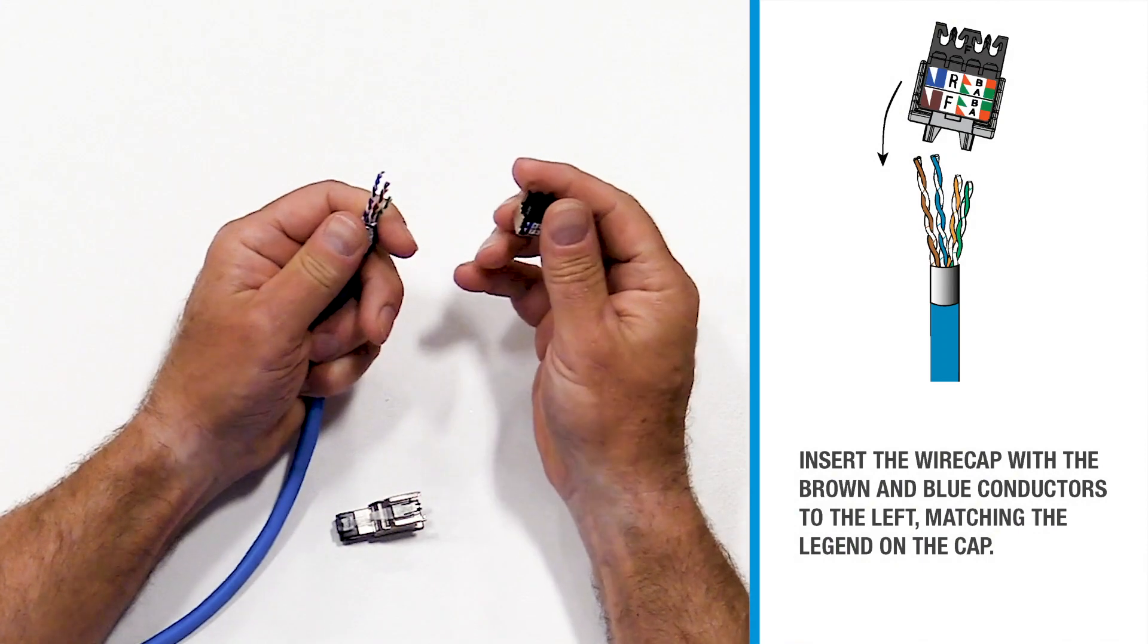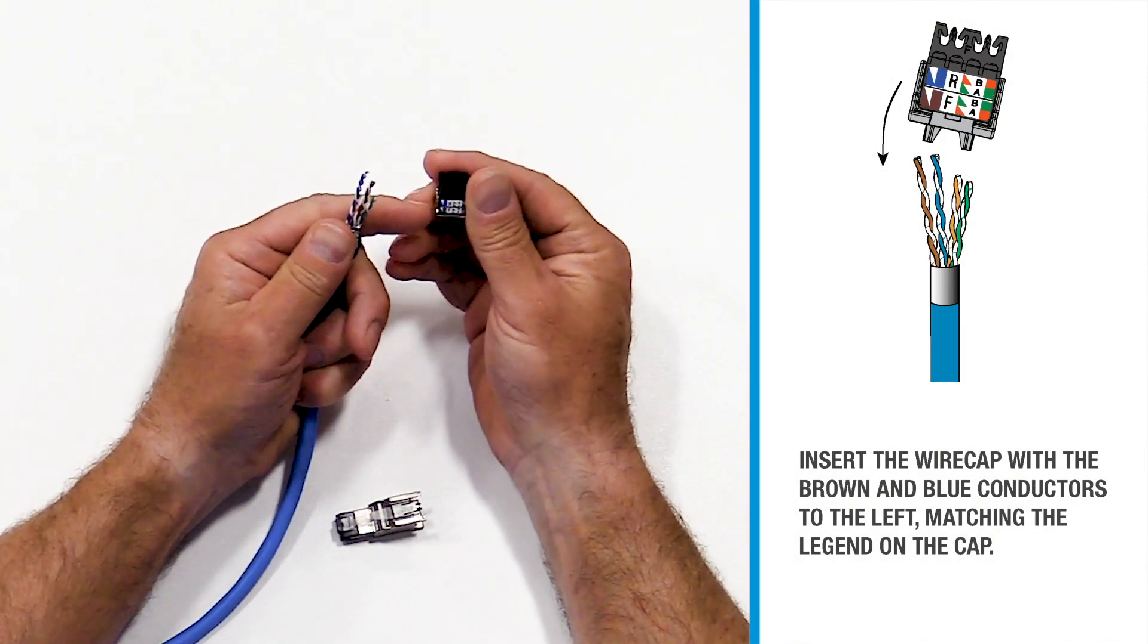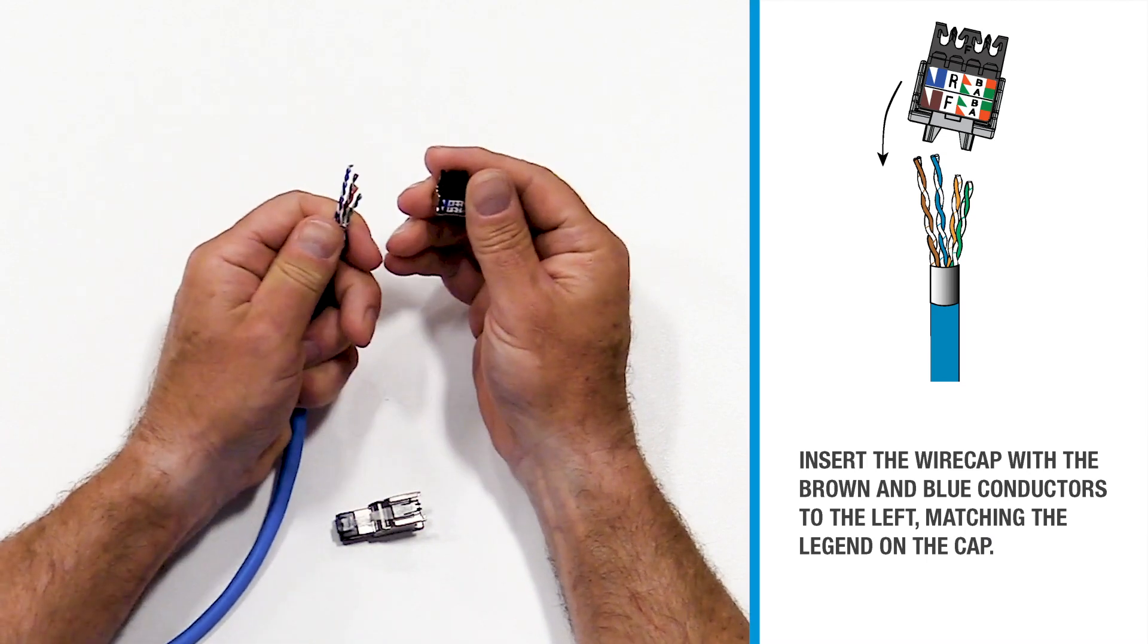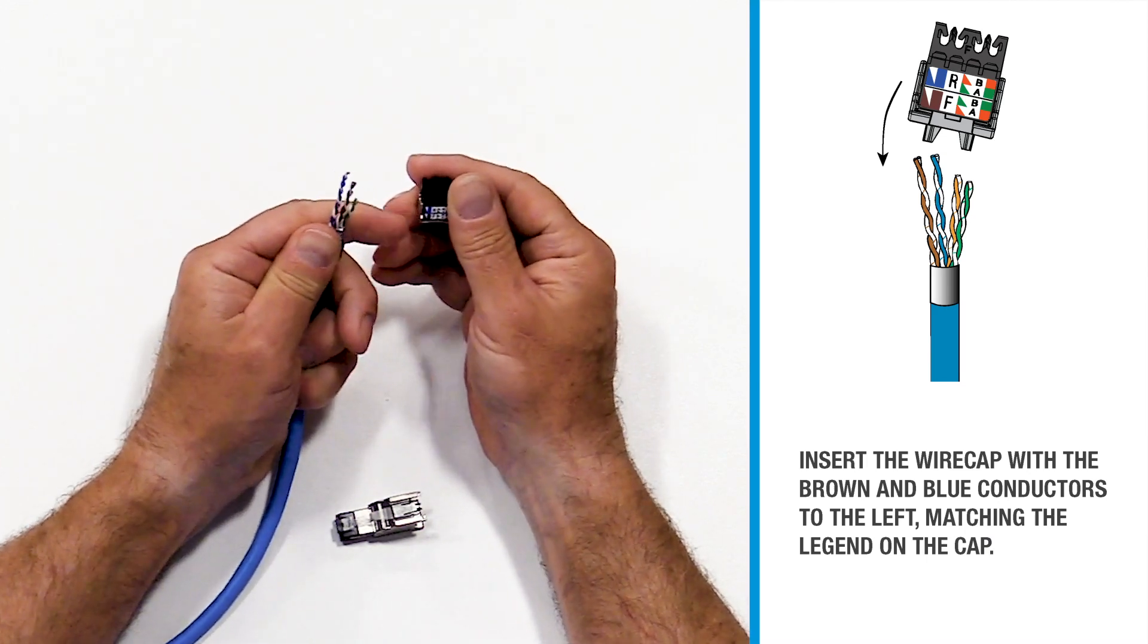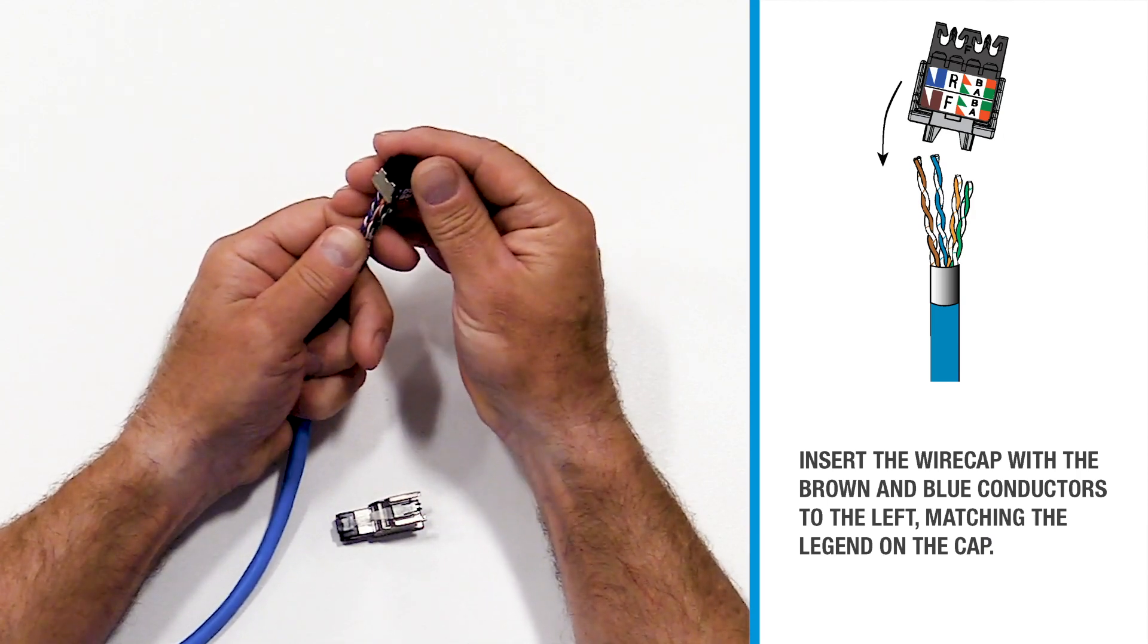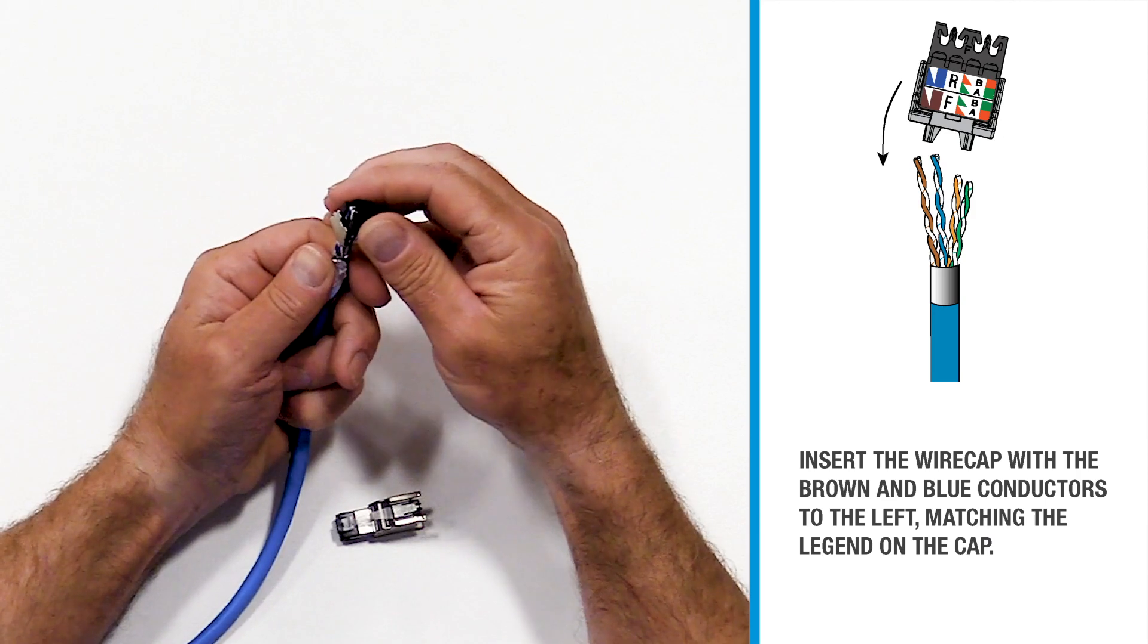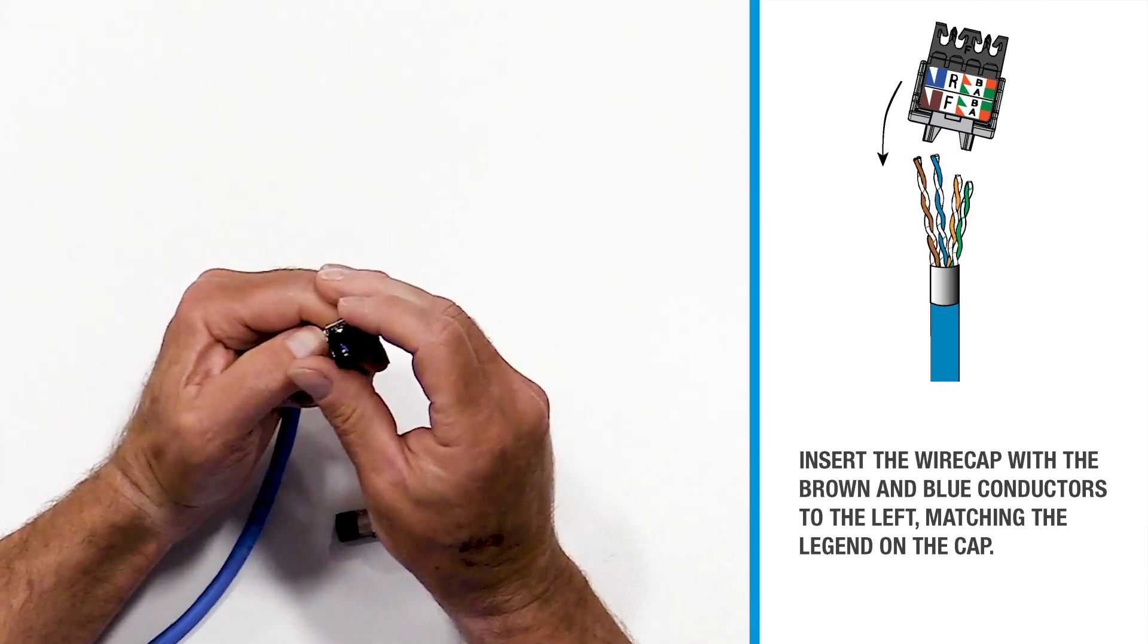With the brown and the blue conductors to your left and the wire cap facing the same direction with the color legend towards you, you'll see that the brown and the blue pair go to the left. Insert the brown and the blue pair first and then the orange and green pair will follow.